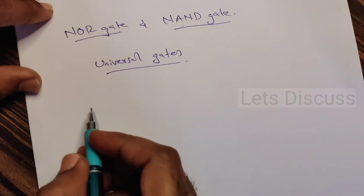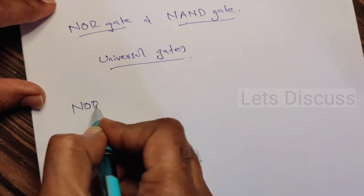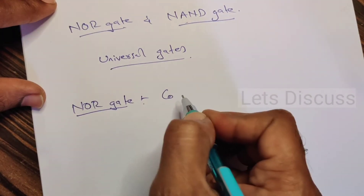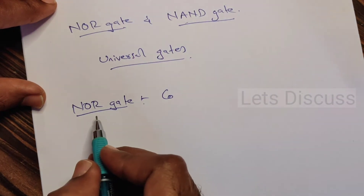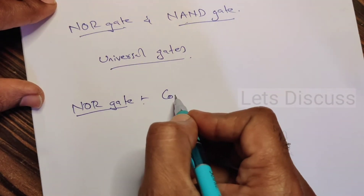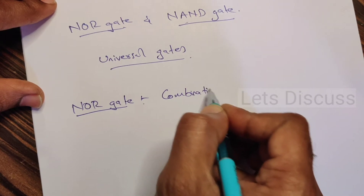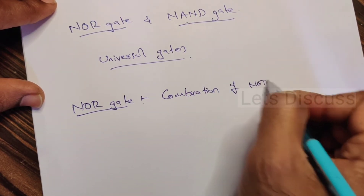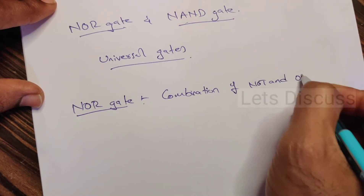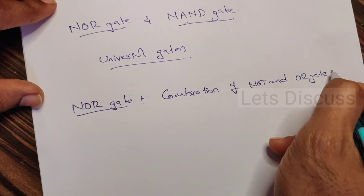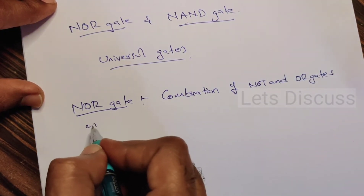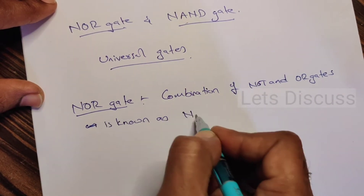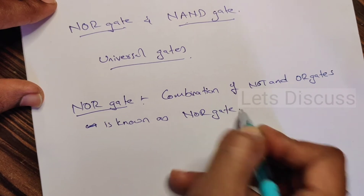First of all, let's discuss about NOR gate. NOR gate is a combination of both OR and NOT gates — combination of NOT and OR gate — and that is known as NOR gate.